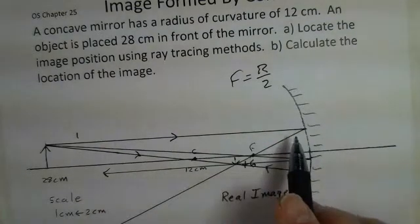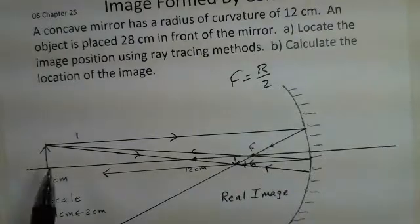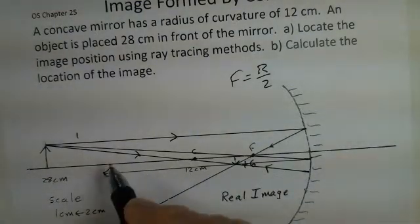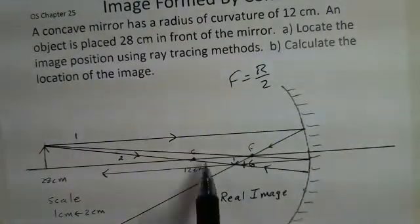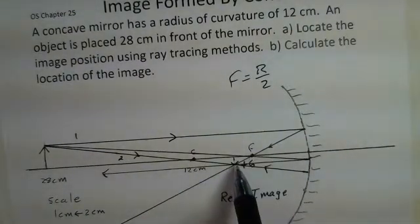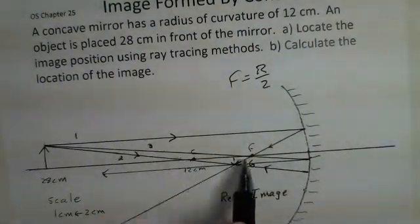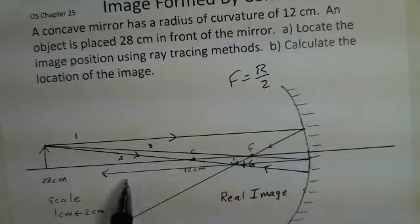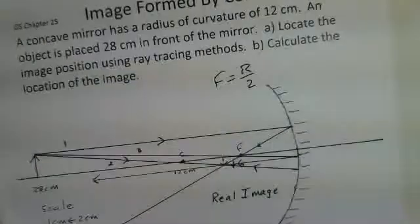Ray one parallel to the optic axis passes back through the focal point. Ray two, I took it through the center of the lens, and it reflects back on itself. Then I had two crossing rays, I located the image. Rule three, if we take a ray through the focal point, it bounces off parallel to the optic axis. Again, just like we had with lenses, there's a connection between focal point and parallel to optic axis.